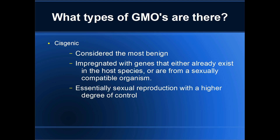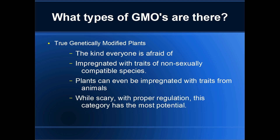The second type is cisgenic, considered the most benign because it's the closest to naturally modifying DNA. Cisgenic GMOs involve impregnating the plant with genes that either already exist in the host species or come from a sexually compatible organism — something in the same genus or similar. Essentially, cisgenic GMOs are plants that have reproduced sexually, but with a higher degree of control, changing only specific genes rather than letting nature take its course.